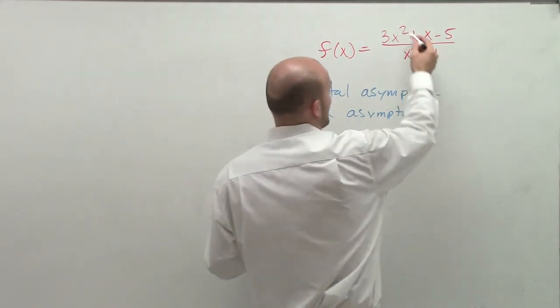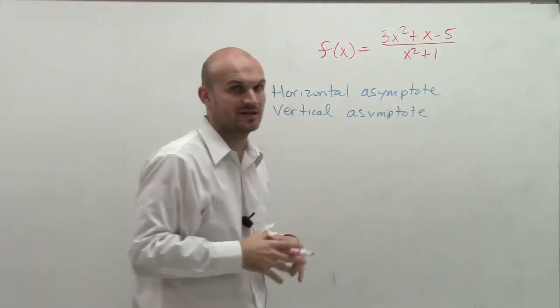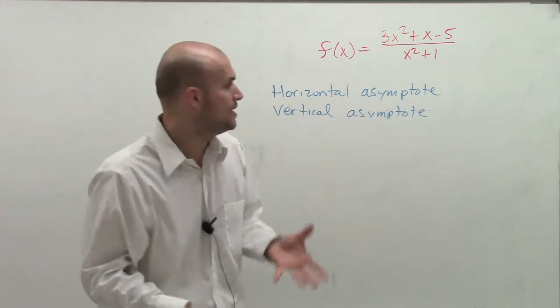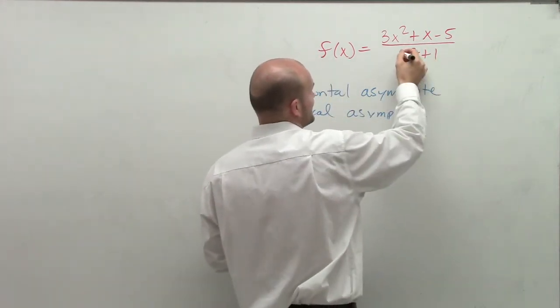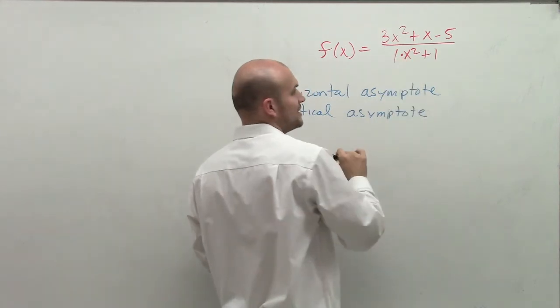Once they're in descending order, I can now compare their exponents. And when their exponents are the same, what we do—so you could say 2 and 2—what we do is we take the leading coefficient. For the denominator, it's going to be 1.